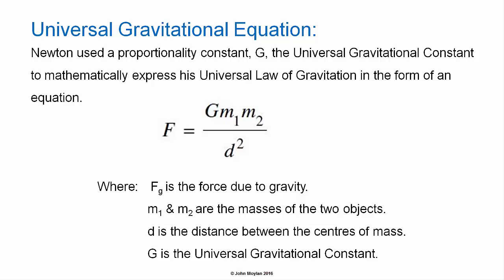In the form of an equation, Newton's law of universal gravitation is: F, the force due to gravity between any two objects, equals G, the universal gravitational constant, multiplied by m1·m2, the product of their masses in kilograms, over d squared, the square of the distance between their centres of mass in metres.